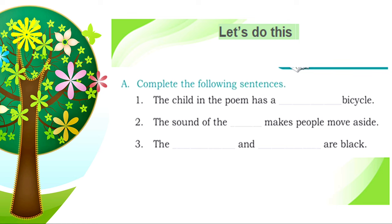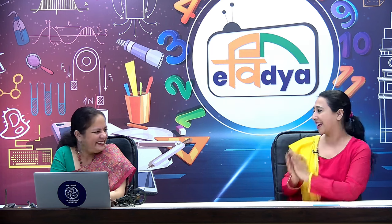Let us complete these sentences from the poem. The child in the poem has a red bicycle. The sound of the bell makes people move aside. The pedals and wheels are black. You have heard the poem nicely and can answer all these questions. Thank you so much ma'am for a beautiful poem recitation and for teaching us. Ma'am Kulvinder Kaur is a TGT in English from Sarvodaya Kanya Vidyalaya, Sagarpur, New Delhi.